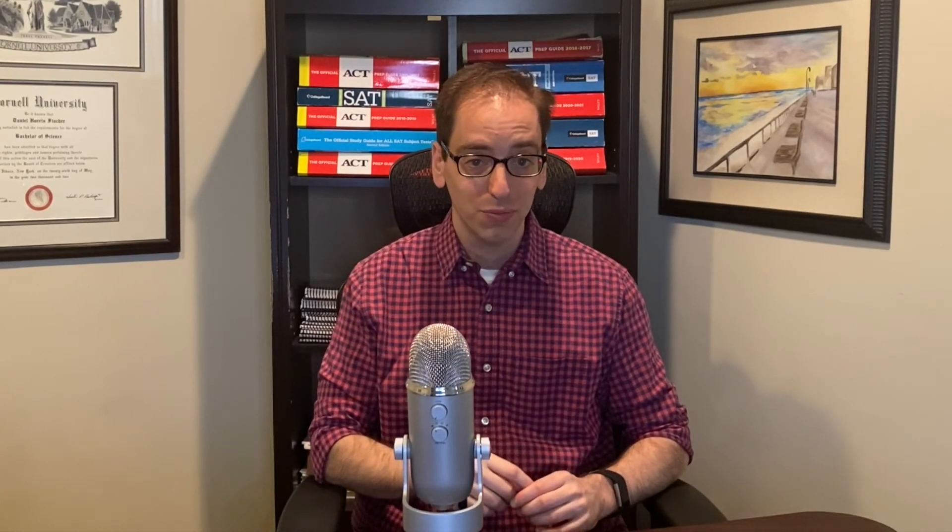Okay, now we're warmed up. I'll let you try the next one on your own. Question 4: In the triangle above, the length of FI is 15. Which of the following additional measurements provides enough information to determine the length of IH? I'll give you a minute—press pause, give it a shot.